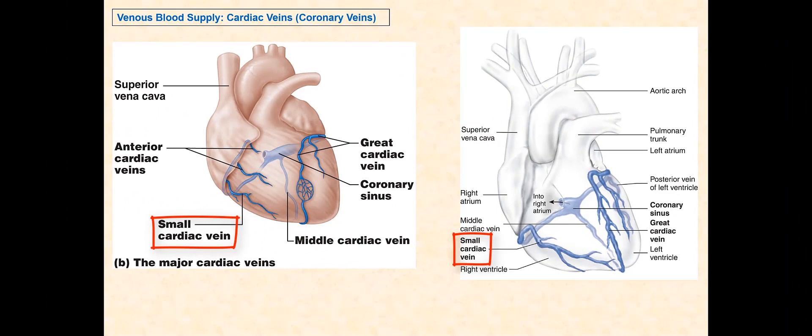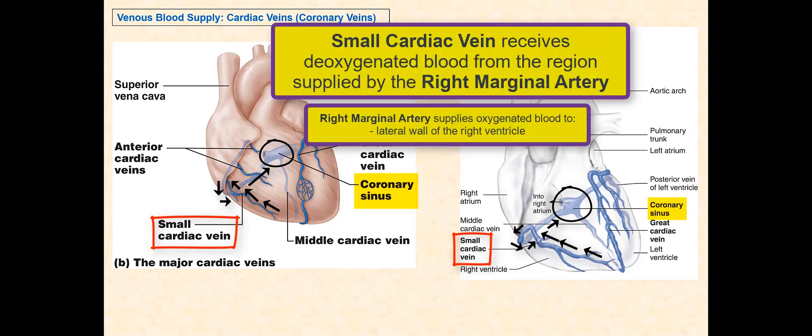The small cardiac vein is found along the coronary sulcus and usually runs alongside the right coronary artery as it encircles or wraps around the heart. The small cardiac vein converges with the coronary sinus. It receives deoxygenated blood from the lateral wall of the right ventricle, the region supplied by the right marginal artery.